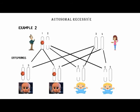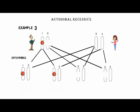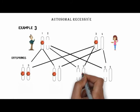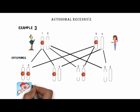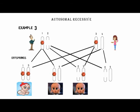Moving forward to example number 3: Father is a carrier and mother is also a carrier. If we see the outcomes, one offspring is diseased as both genes are defective, two of them will be carriers, and one possibility is a normal offspring.